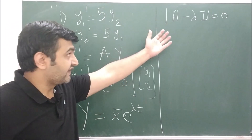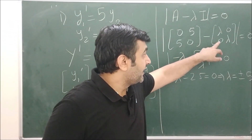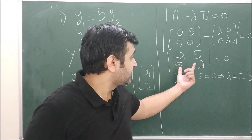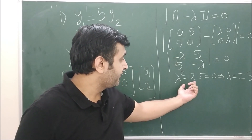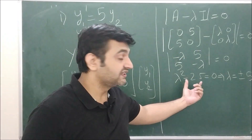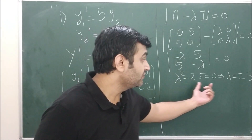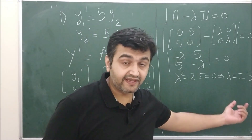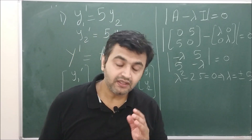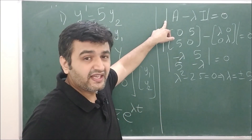Substituting A and I, when you compute det(A − λI) you get λ² − 25 = 0. This is the characteristic equation, and the roots are λ = ±5. The roots of the characteristic equation are nothing but the eigenvalues.